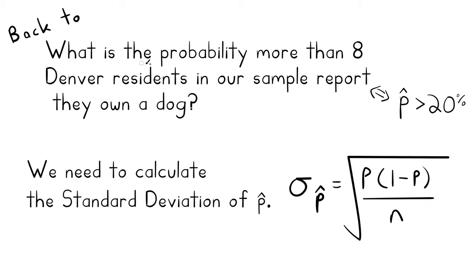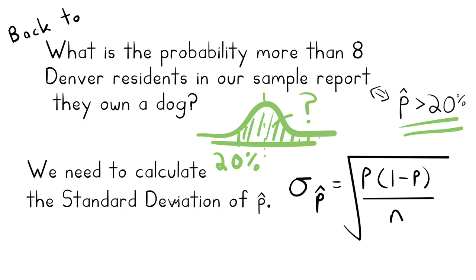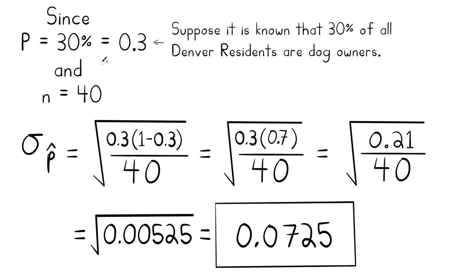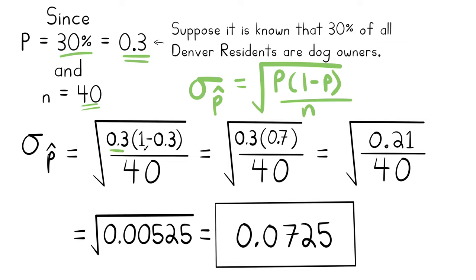Now we're ready to calculate the standard deviation of P-hat. Since 30 percent of Denver residents are dog owners, P = 0.3. The calculation is: 0.3 times (1 minus 0.3) = 0.3 times 0.7 = 0.21; divide by 40 to get 0.00525; then take the square root, giving 0.0725. That is our standard deviation of the sample proportion.